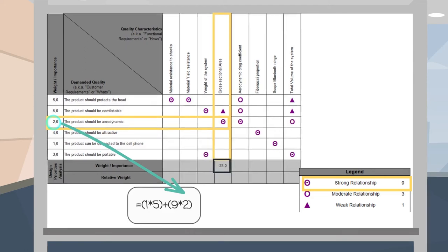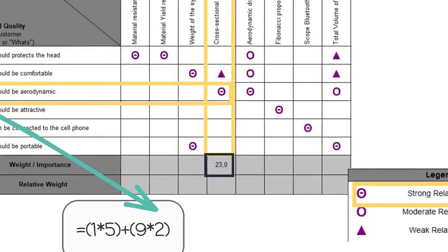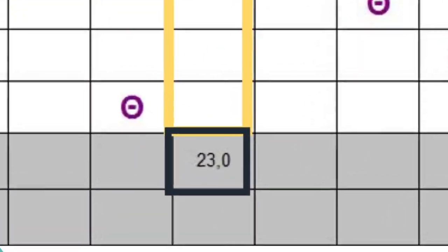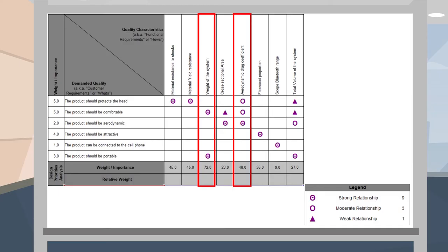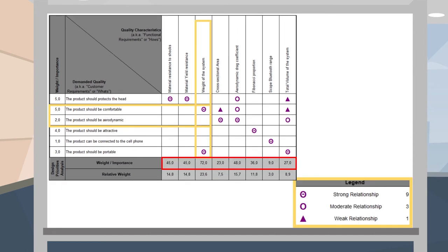The company should focus on the items of aerodynamic drag coefficient and weight since they are the items with a higher score, in order to achieve a competitive product. Please note that the relative weight is the estimated importance expressed in terms of percentage.